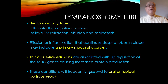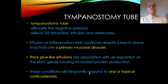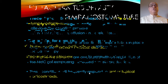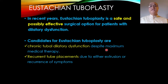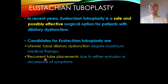Effusion or inflammation that continues despite tubes in place may indicate a primary mucosal disorder. Thick, glue-like effusions are associated with upregulation of genes causing increased protein production, and these conditions will frequently respond to oral or topical corticosteroids. Eustachian tube tuboplasty is a safe and possibly effective surgical option for patients with dilatory dysfunction. Candidates include chronic tubal dilatory dysfunction despite maximum medical therapy and recurrent tube placements due to extrusion or recurrence of symptoms.